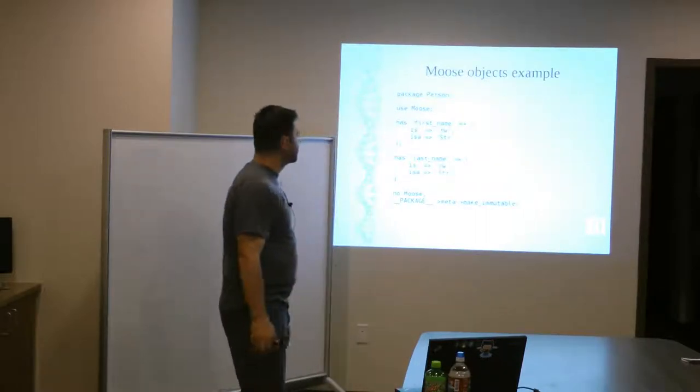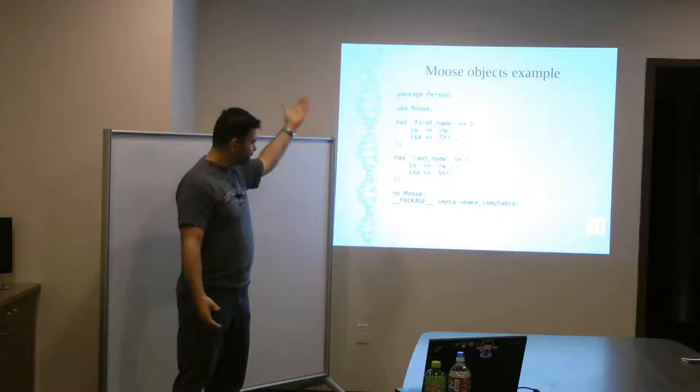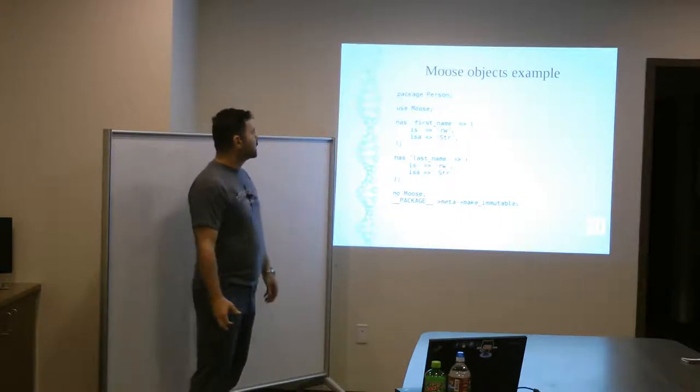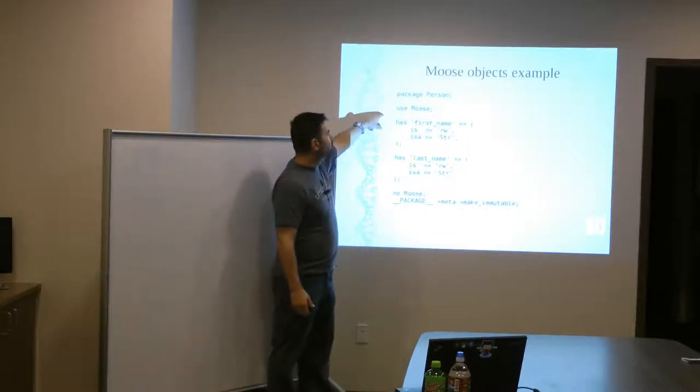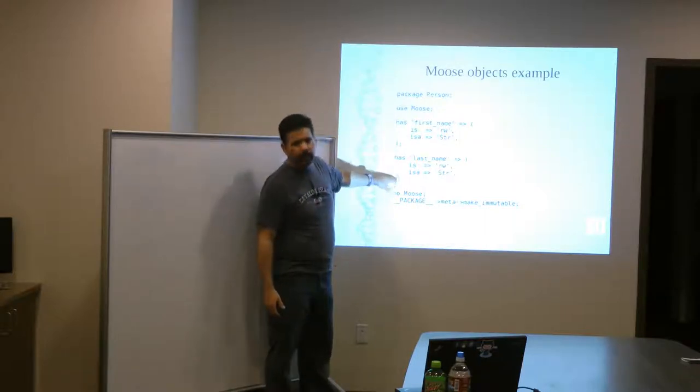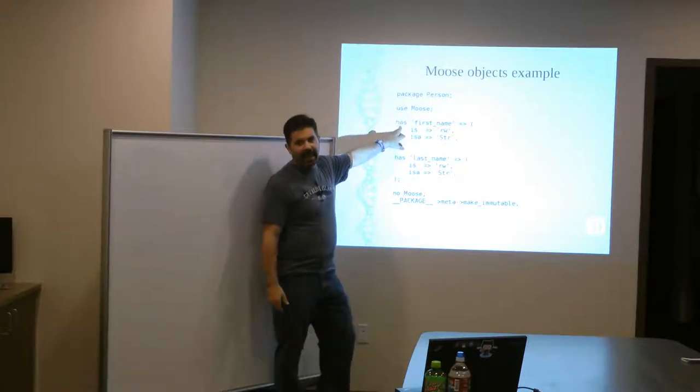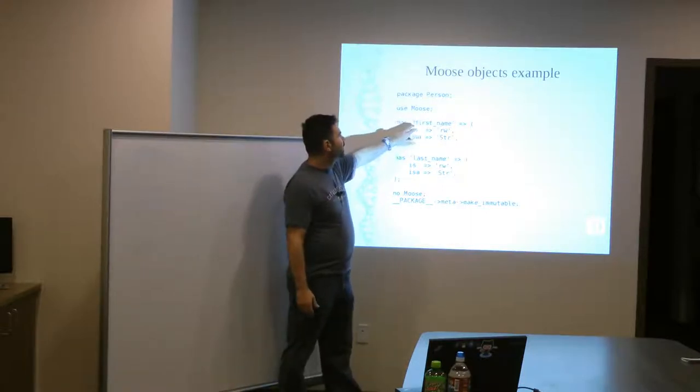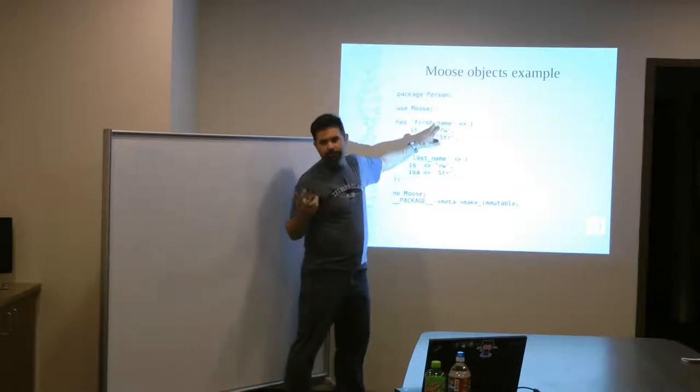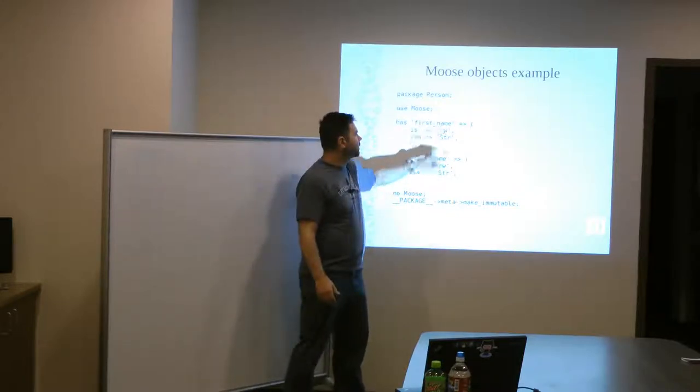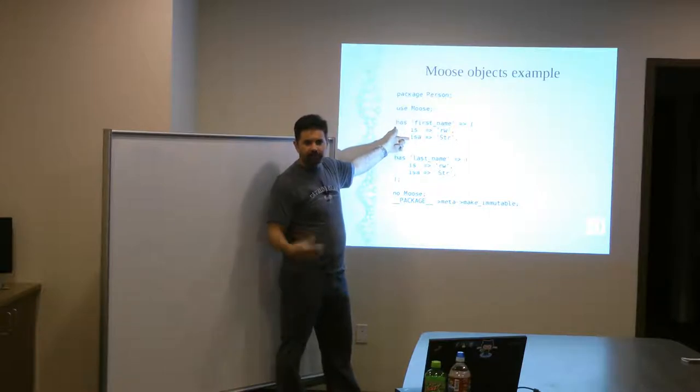So here's an example of a person object that, like we talked about with the inside-out stuff, but implemented using Moose. So we have a package in person just like before. And instead of using class STD, we use Moose. Now things start looking really weird for people who haven't done anything with Moose before. There's all these new keywords and things. But this is the metadata. So here we have the has keyword. And then we define this attribute or class variable, first name.